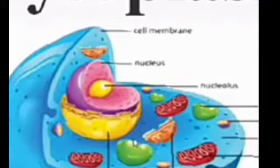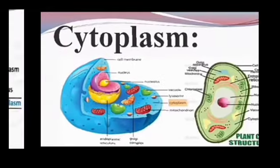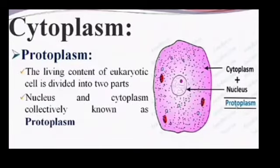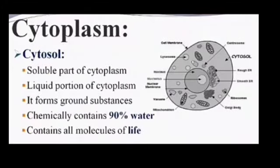If we talk about prokaryotic cells, then the nucleus contains DNA, which is called hereditary material. In cytoplasm, it contains 90% of water and ground substance.